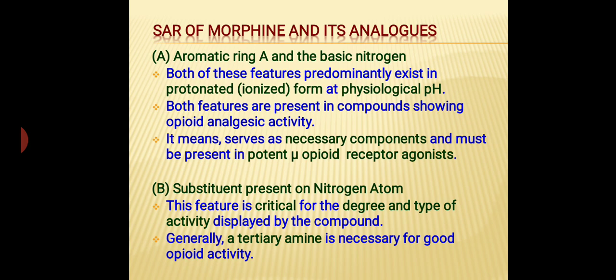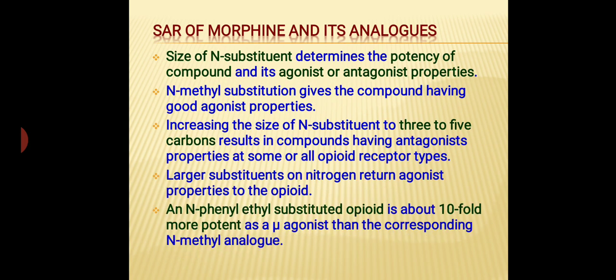The second part is the substituent present on the nitrogen atom. This particular feature is critical for the degree and type of activity displayed by the compound. In general, a tertiary amine is necessary for good opioid activity. The size of the substituent present on the nitrogen atom determines the potency of the compound and whether it will serve as an agonist or antagonist.